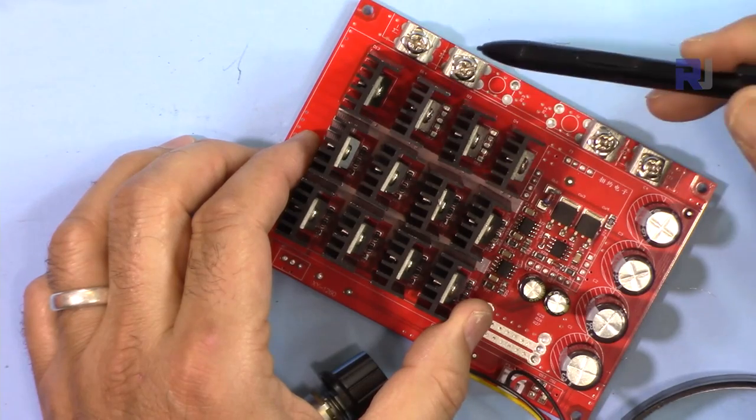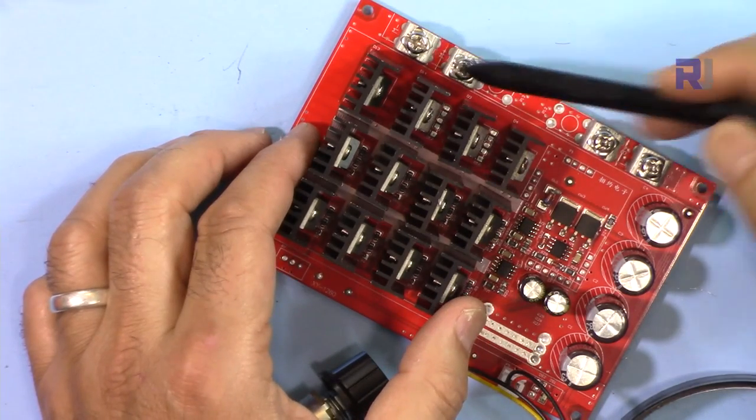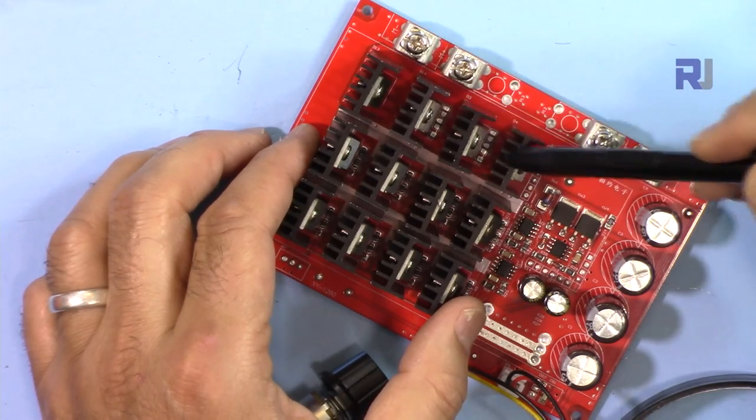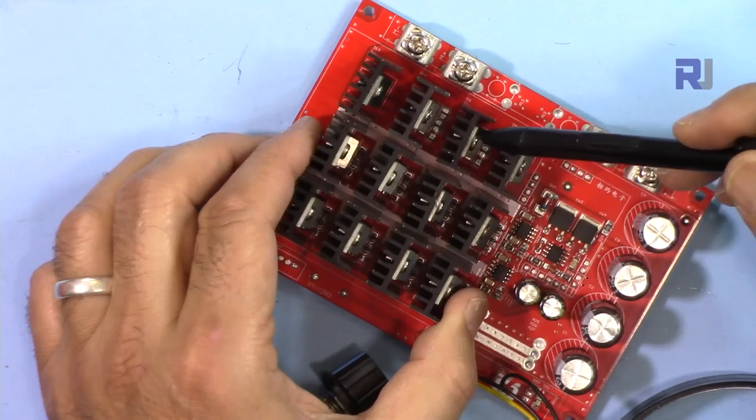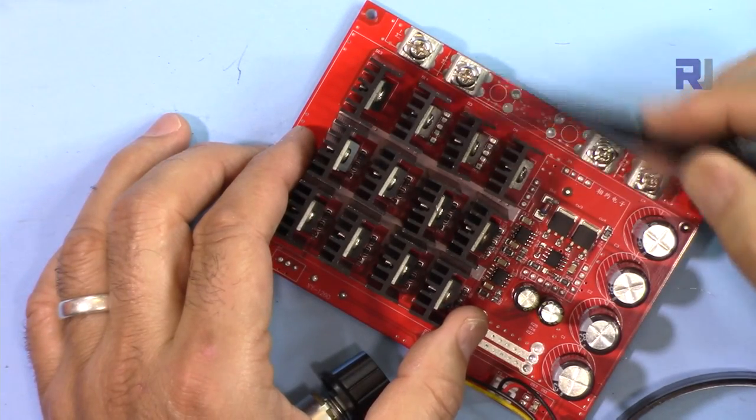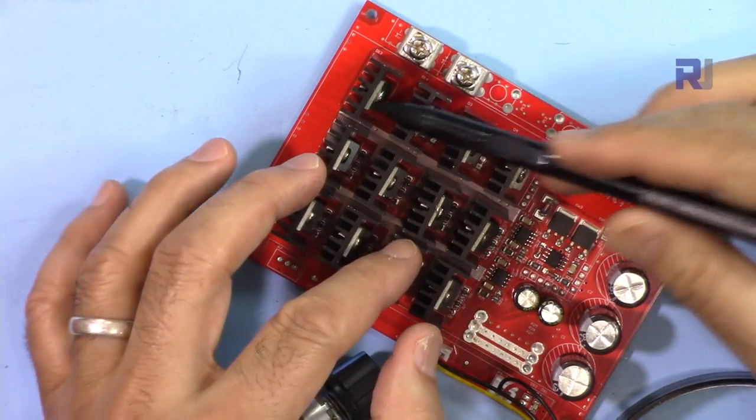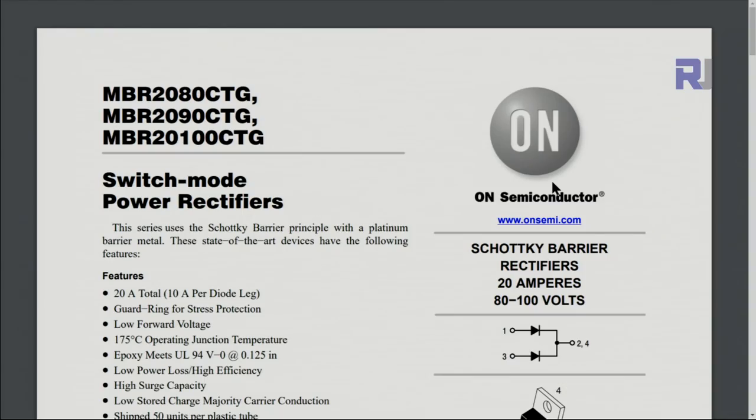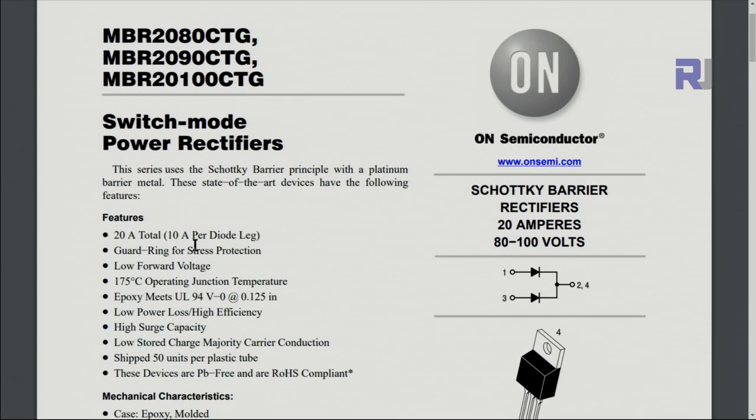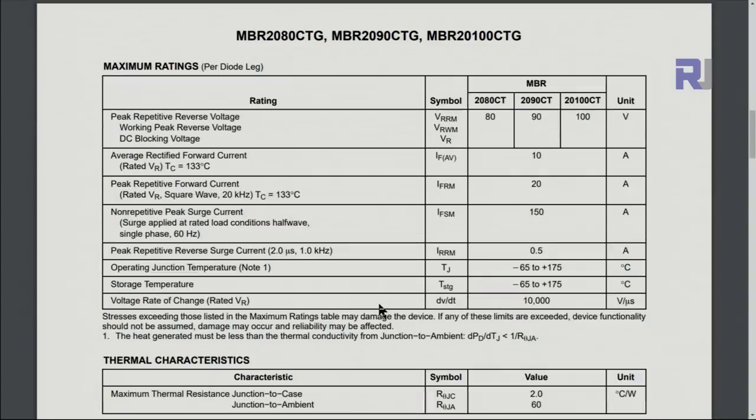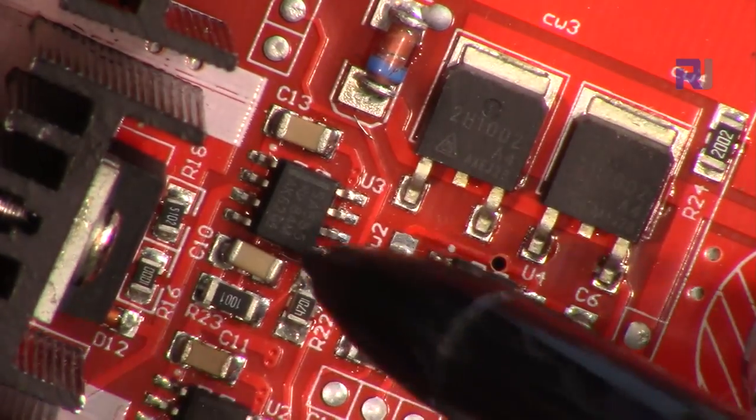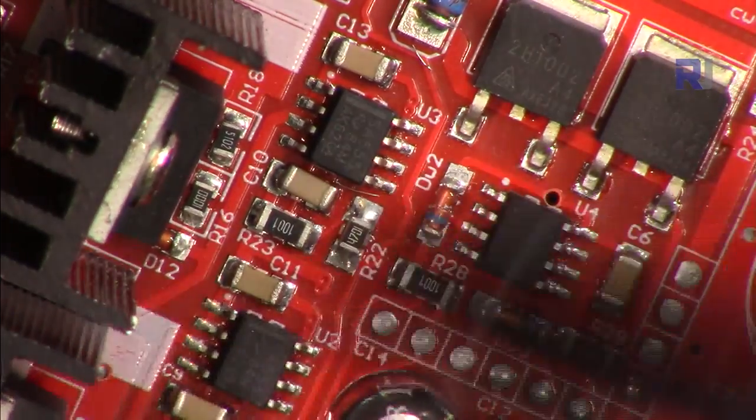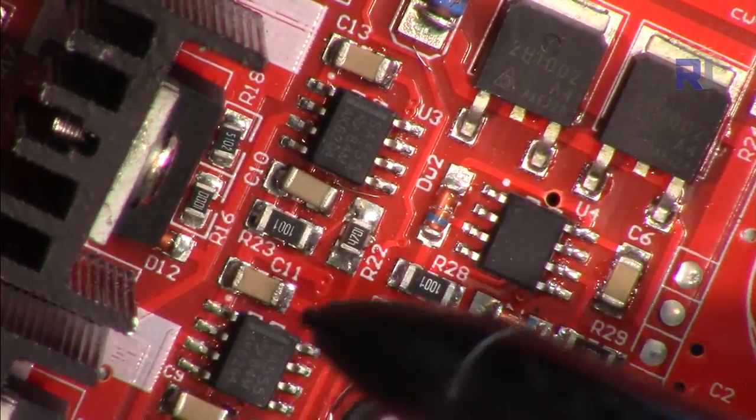And here for the output stage, for the kickback current that comes from the motor because of inductive load, we have four diodes. These are the Schottky diodes at the output stage for the kickback current to protect the circuit. These four are 20100 CT. Each package has two diodes, 10 ampere per diode and 20 ampere one package can handle. I will provide the datasheet for this one as well.